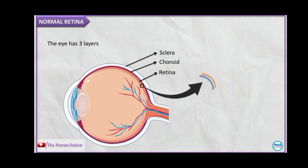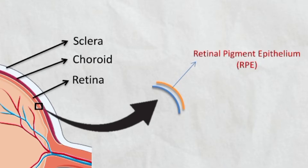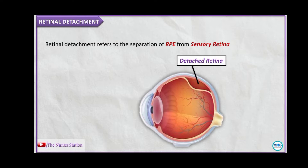The retina is mainly divided into two layers. The outer is the retinal pigment epithelium and inner to the retinal pigment epithelium is the sensory retina. Retinal detachment refers to the separation of the retinal pigment epithelium from the sensory retina — that is, the two layers of the retina separate from each other.